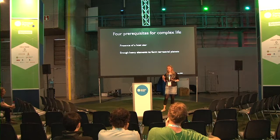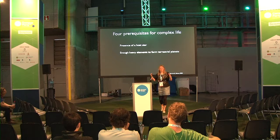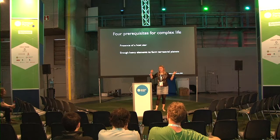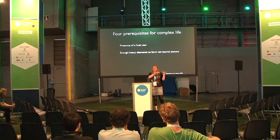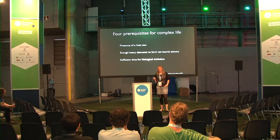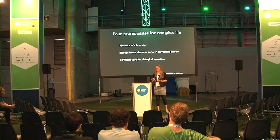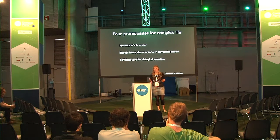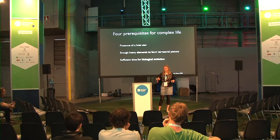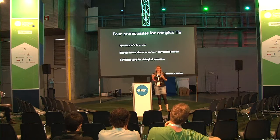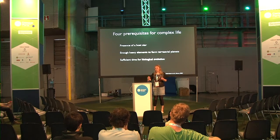You need enough heavy elements to form terrestrial planets. Here on Earth we have a terrestrial planet, and it seems that a terrestrial planet is favorable for life. There are even people speculating about life possible in the clouds of Saturn's atmosphere, but we call that speculation for now. It seems that you need sufficient time for biological evolution. Most likely unicellular life started pretty quickly after Earth formed — probably within the first 500 million to one billion years. But then it took another billion years before more complex life started to arise.